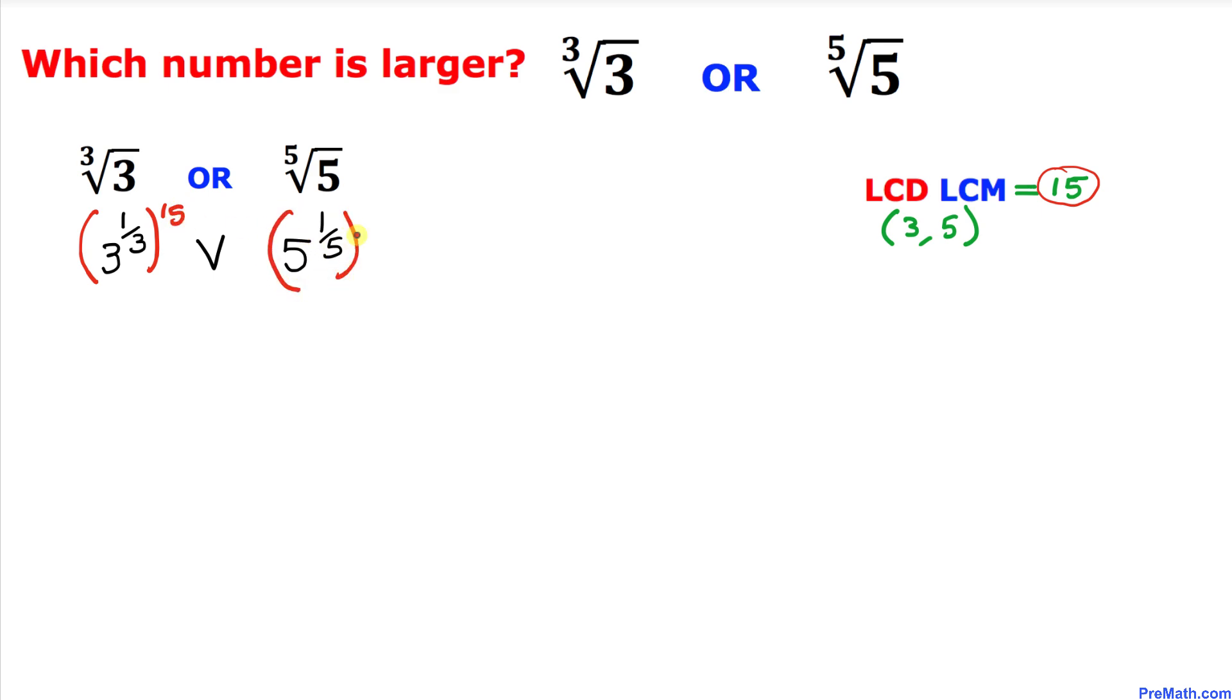Now let's go ahead and simplify these numbers by using this power rule. This number could be written as three power, according to this power rule, one third times 15, which is going to give us power five. On this side, five power one fifth times 15 is going to be simply 3.